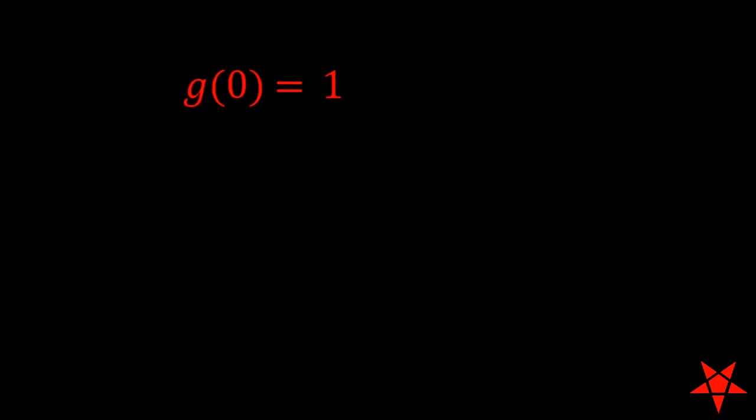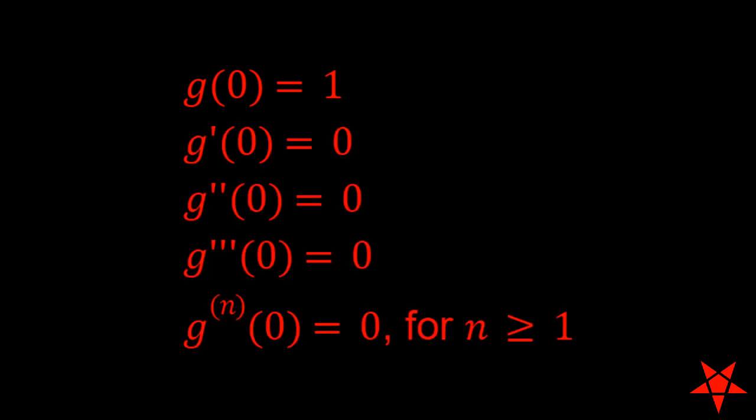Thus, focusing on z equals 0, we see that g of 0 is 1, the derivatives of g of z evaluated at z equals 0 are also 0, and the same goes for all higher derivatives of g.